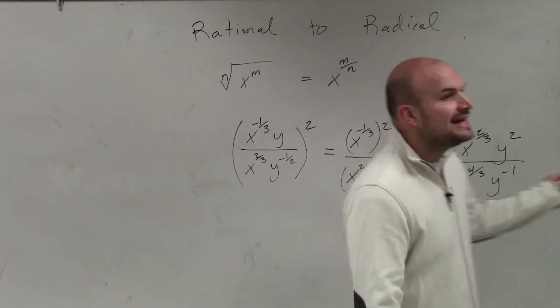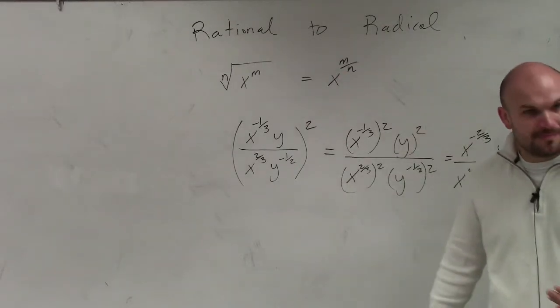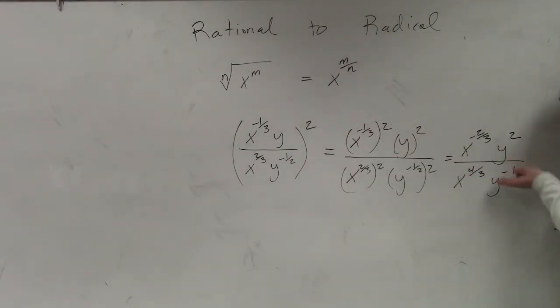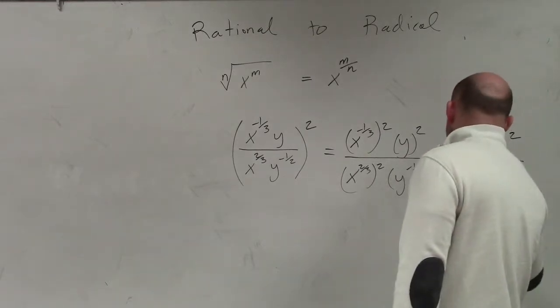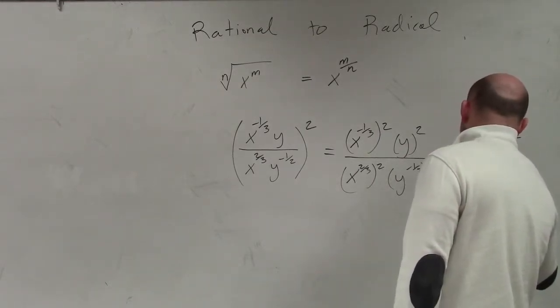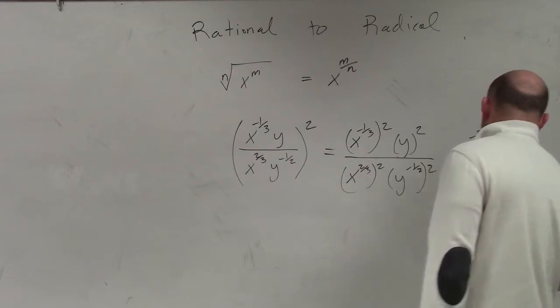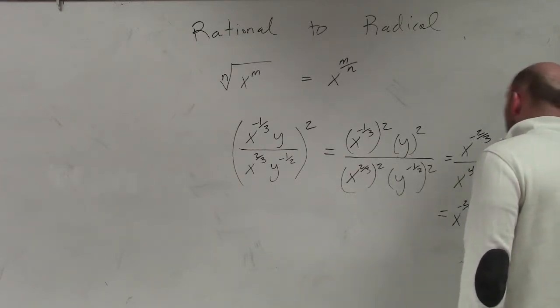So now I am subtracting, right? So if I am subtracting, oh I'm sorry, now I am dividing exponents. Now, just like we did last chapter, when we are dividing exponents, we're going to subtract the powers. So now we subtract the powers. So this becomes x to the negative 2 thirds minus 4 thirds, y to the second minus 1.